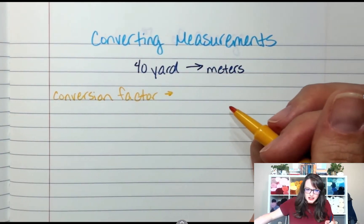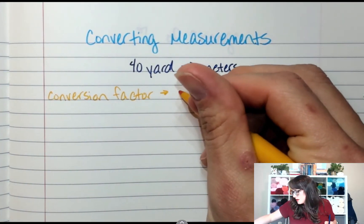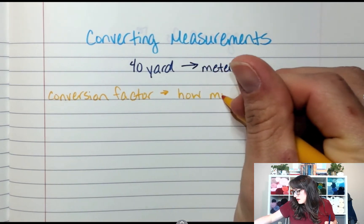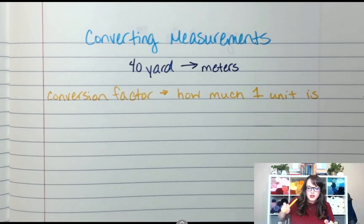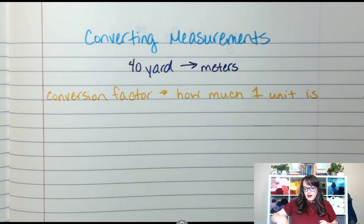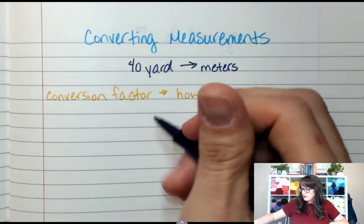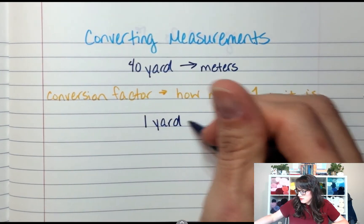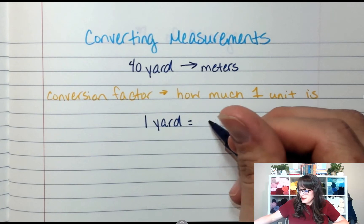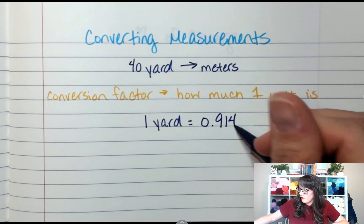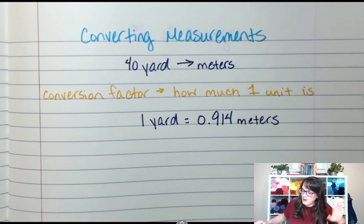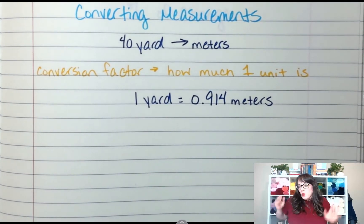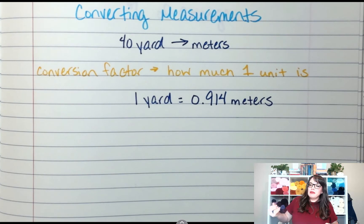A conversion factor is going to tell you how much one thing is — it's kind of like a unit rate. So for this instance, yards to meters, I'm going to say that one yard is equal to 0.914 meters. Why is that a thing? Not my problem. So one yard is 0.914 meters — that's not pretty, but that is what it is.